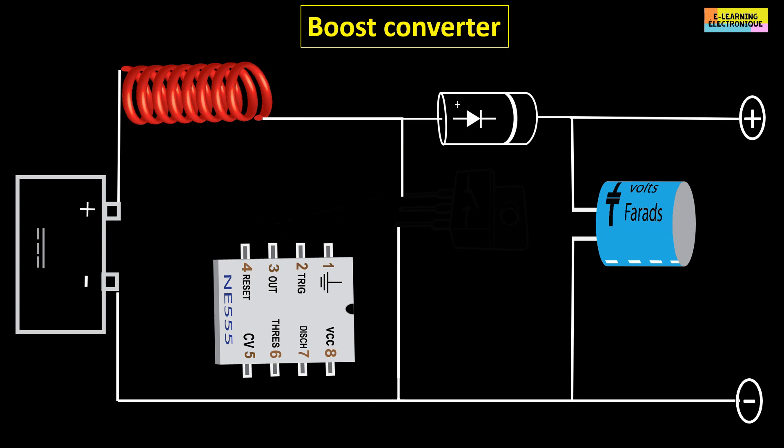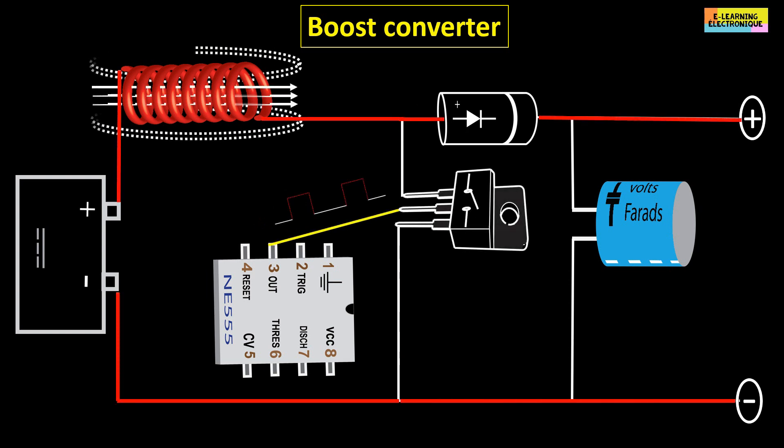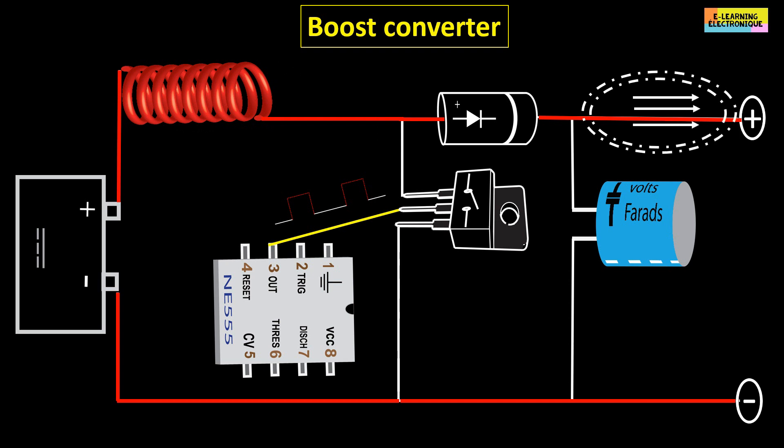In a second step, when the MOSFET is in the open position, the energy stored in the coil is transferred to the voltage source in the load, giving it a higher voltage than the source. So thanks to a coil which has the characteristic to increase its voltage according to the variation of the current which crosses it, one can increase the voltage in a circuit without having to add in series another source of voltage.